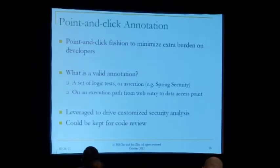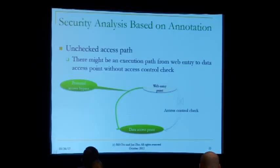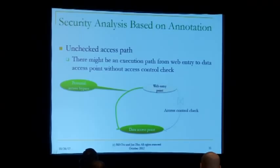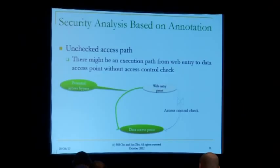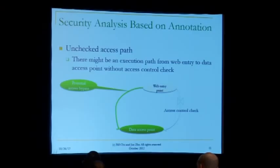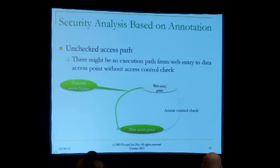To give you an idea of what sort of analysis you could do with this additional information: imagine you have a web entry point, it goes to some database access, and you ask the developer where their access control check or CSRF protection is for that particular update. With those annotations, we can run static analysis looking at all possible paths from all possible web entry points to that particular database operation. If we find a path along which there is no annotation, that's a possible bypass of the authentication check. We've actually found those kinds of vulnerabilities in real-life code.